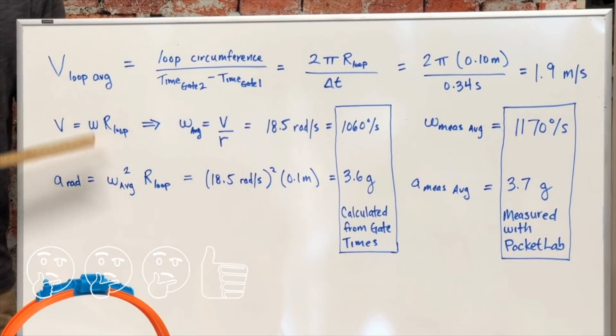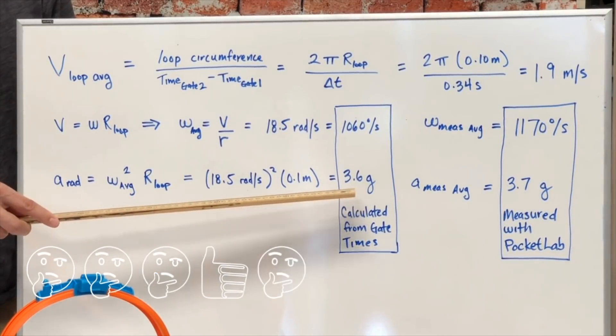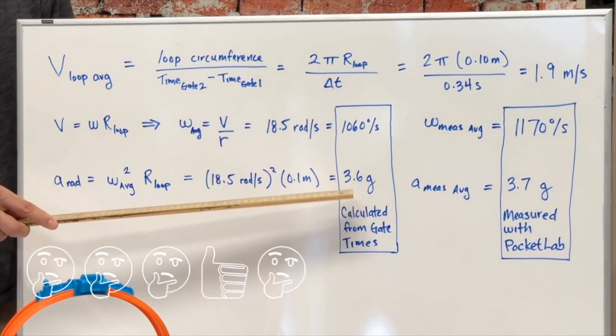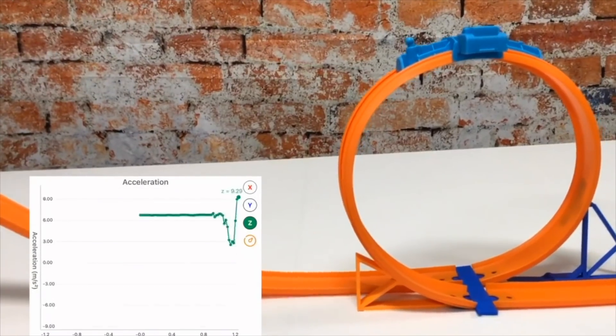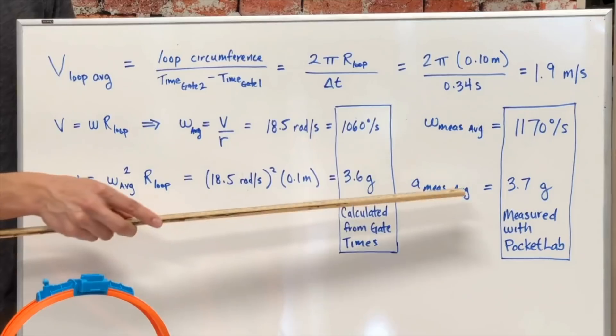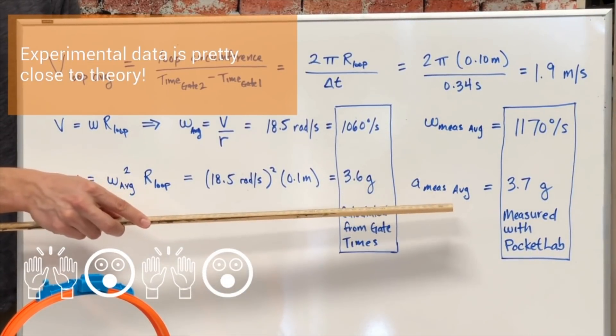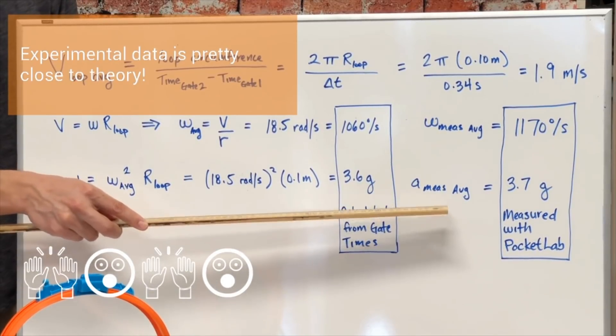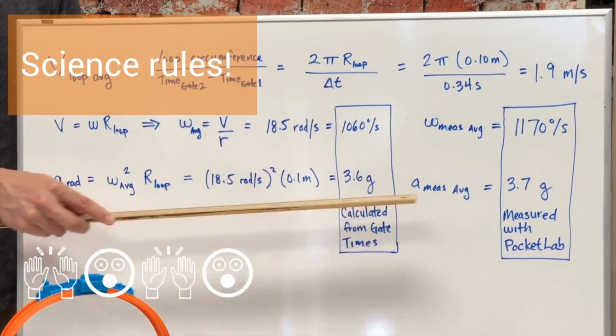Now, we can take those timing gate data and also calculate our radial acceleration or the g-forces that we're feeling inside the loop. And what we calculate is 3.6 G's on average. Now, if we look at our measured data and average that out over the loop, we averaged about 3.7 G's. So, we're getting good agreement from the theory that we're using and our measurements of the timing gates versus our direct measurements using the gyroscope and the accelerometer.